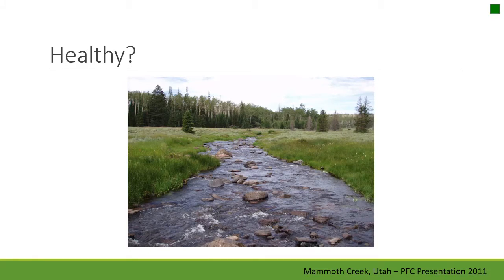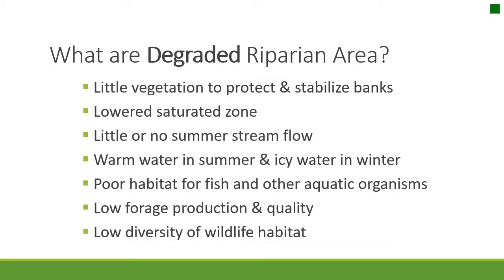This is a good example of what a healthy stream riparian area looks like. Degraded riparian areas, in contrast, have little vegetation to protect and stabilize banks, which causes a decrease in sinuosity over time, lowered saturation zones, lower stream flow in summer, warmer water in summer, icy conditions in winter — and this overall creates poor habitat for both fish and terrestrial wildlife.